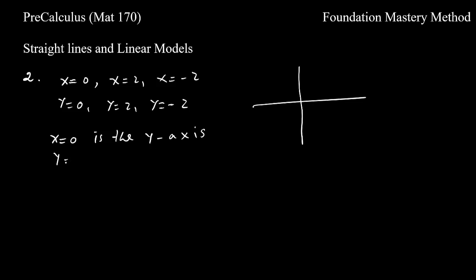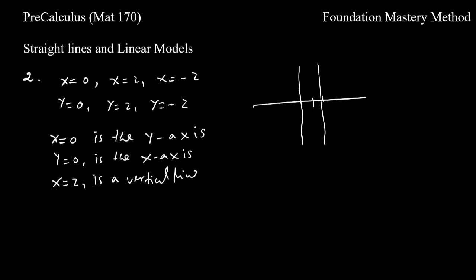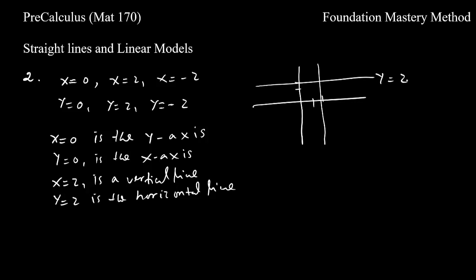In the same way, when y=0, that is the x-axis. When x=2, everywhere on that line x is 2, so x=2 is a vertical line 2 units to the right. And y=2 is a horizontal line 2 units up.